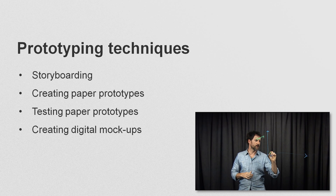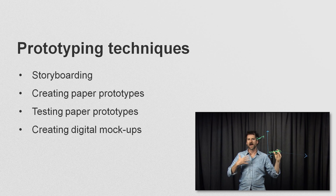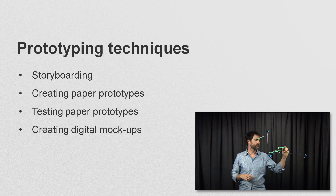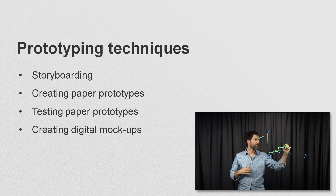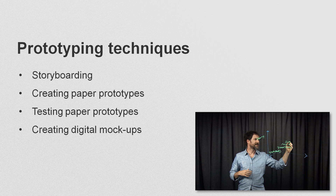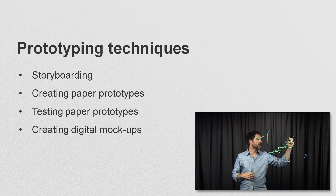So at the beginning of a design project, you might start out with storyboards that show the overall interaction. As you continue, you may get to paper prototypes that start to specify the user interface, then build something that's a pixel-level digital mockup, wireframes, then get to something interactive but with canned content. And then over time, you may add in the database and get it ready to launch.